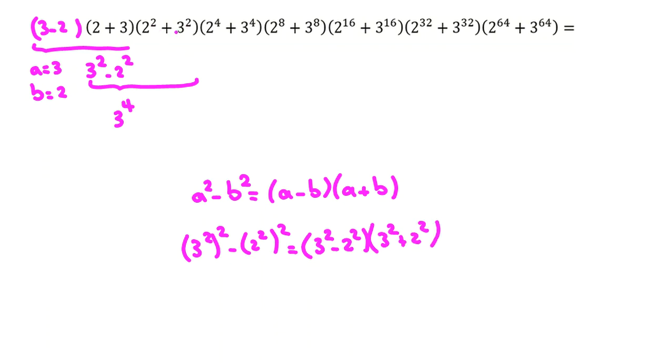We have (3² + 2²) here and (3² - 2²) here. So it will be (3²)² - (2²)², which equals 3⁴ - 2⁴.